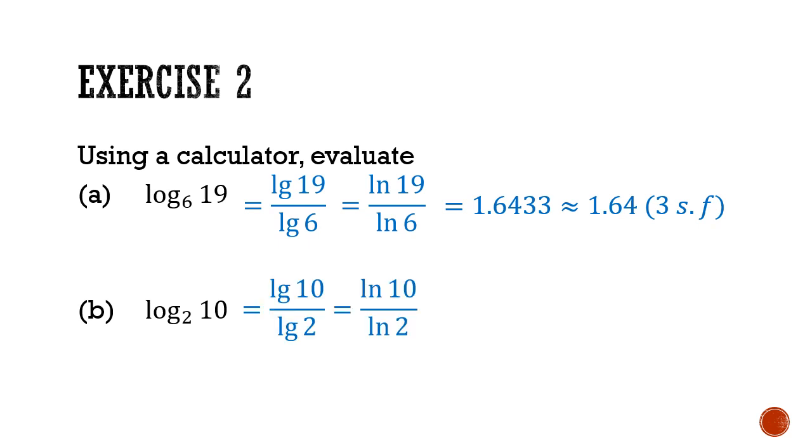Similarly, for part b, you can take the common log or the natural log. It will still give you 3.32 to three significant figures.